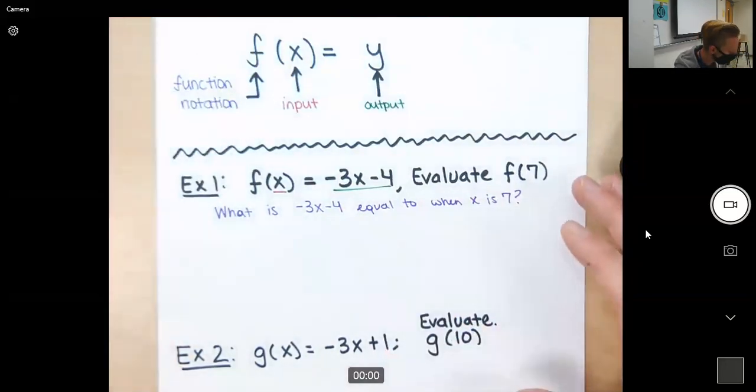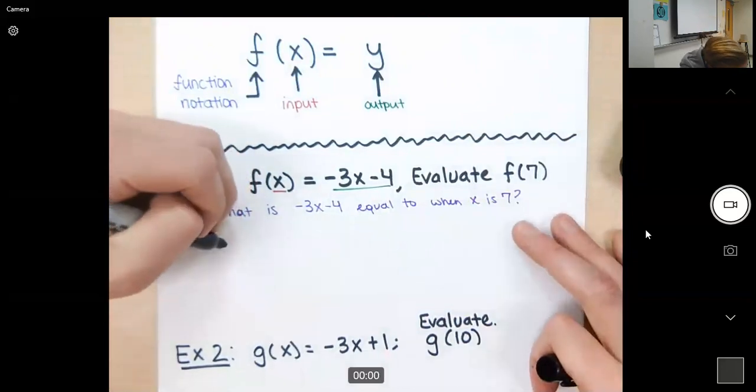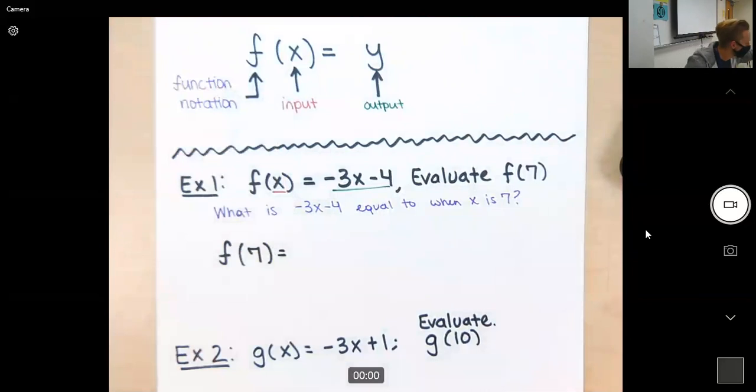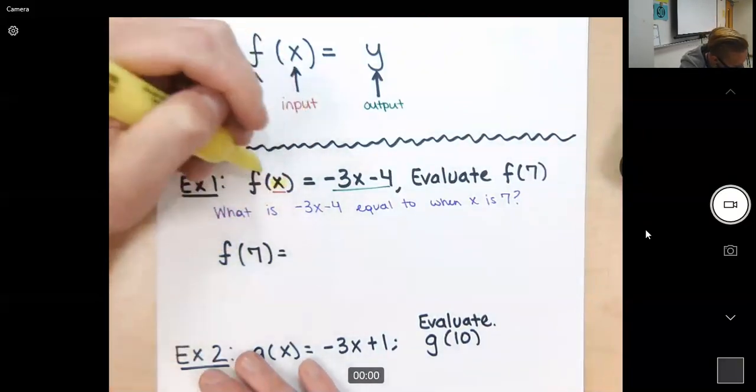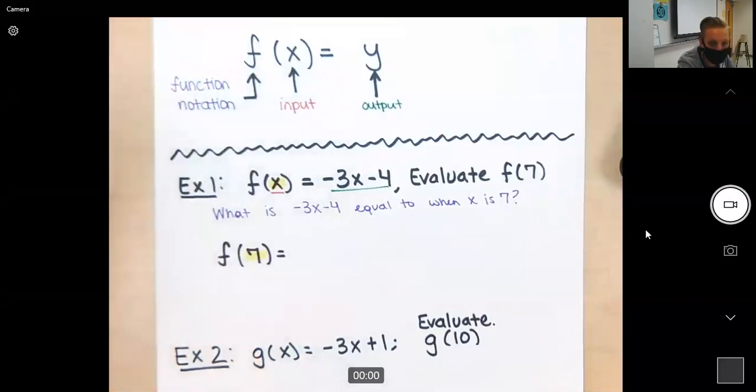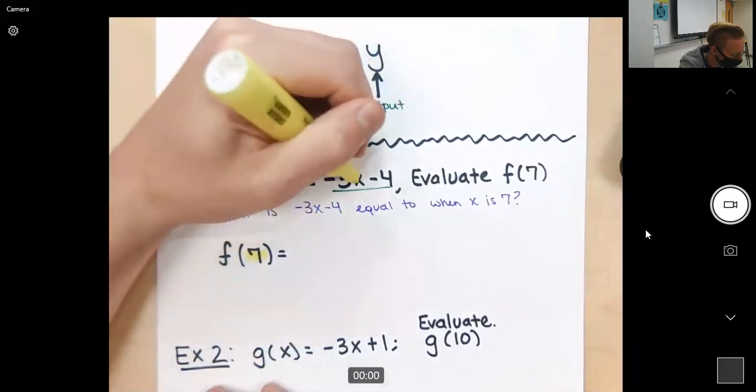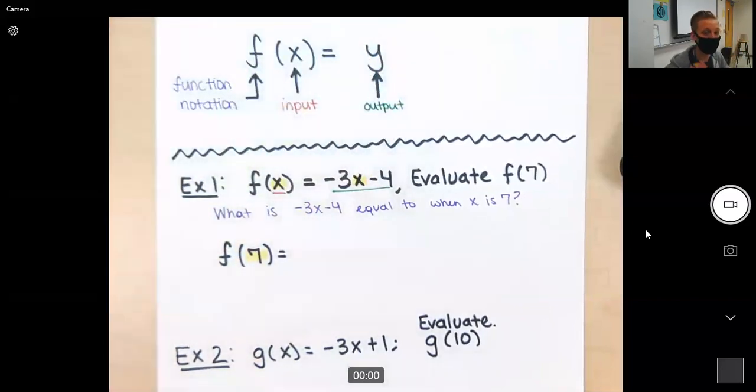So all that's going to happen here is, and I want you to pay close attention, is I have f(7). What we are doing is we are replacing x with 7. So anywhere that you see an x inside negative 3x minus 4, that's not going to be x anymore, it's going to be 7.